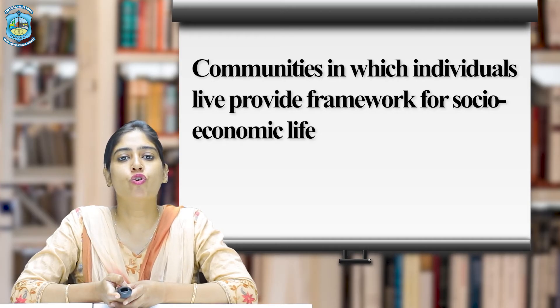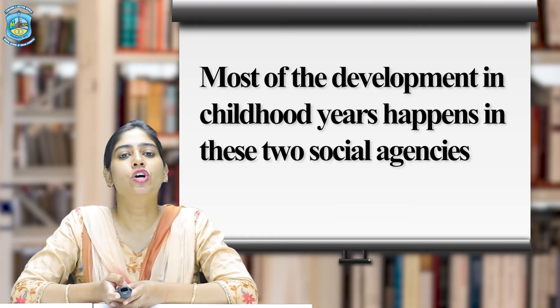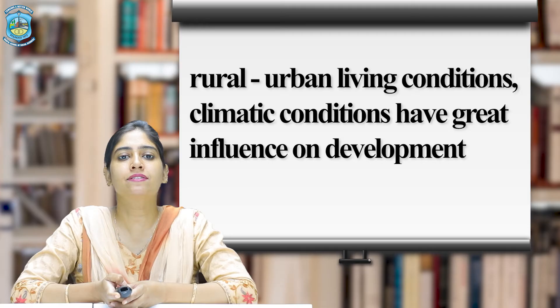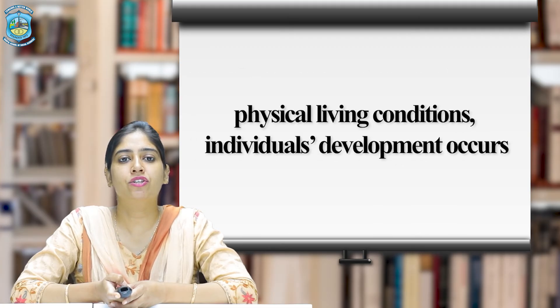Another important factor is society. Society provides certain rules by which to live and affects individuals in various ways across their lifespan. Communities in which individuals live provide a framework for socio-economic life. After the family, the school is the most influential social agency in the life of a child. Most of the development in childhood years happens in these two social agencies — family and school.